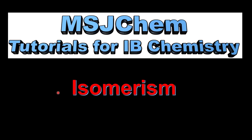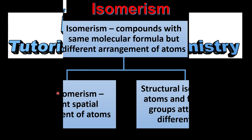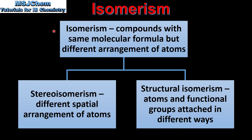This is MSJChem. In this video I'll be looking at the different types of isomerism. We'll start with the definition of isomerism: compounds with the same molecular formula but different arrangement of atoms.